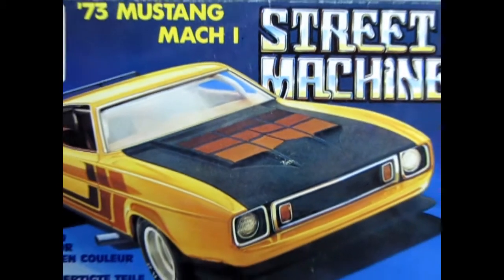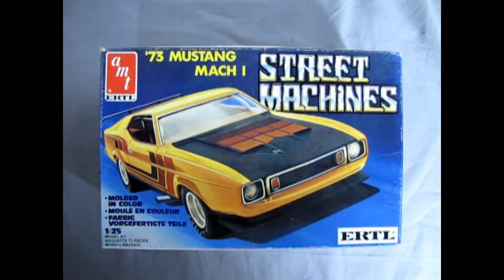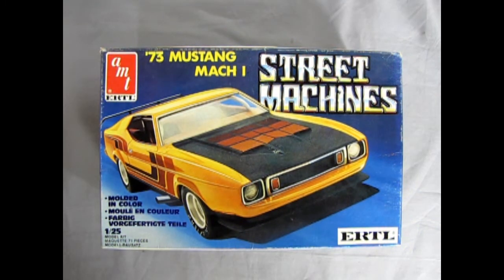Now we roll the clock all the way back to 1973 as we get to check out the 73 Mustang Mach 1 Street Machine version by AMT Ertl. Now this Mustang originally came out in 1971 with racing parts but was re-boxed in 1975 as a Warren Tope Trans Am Mustang.